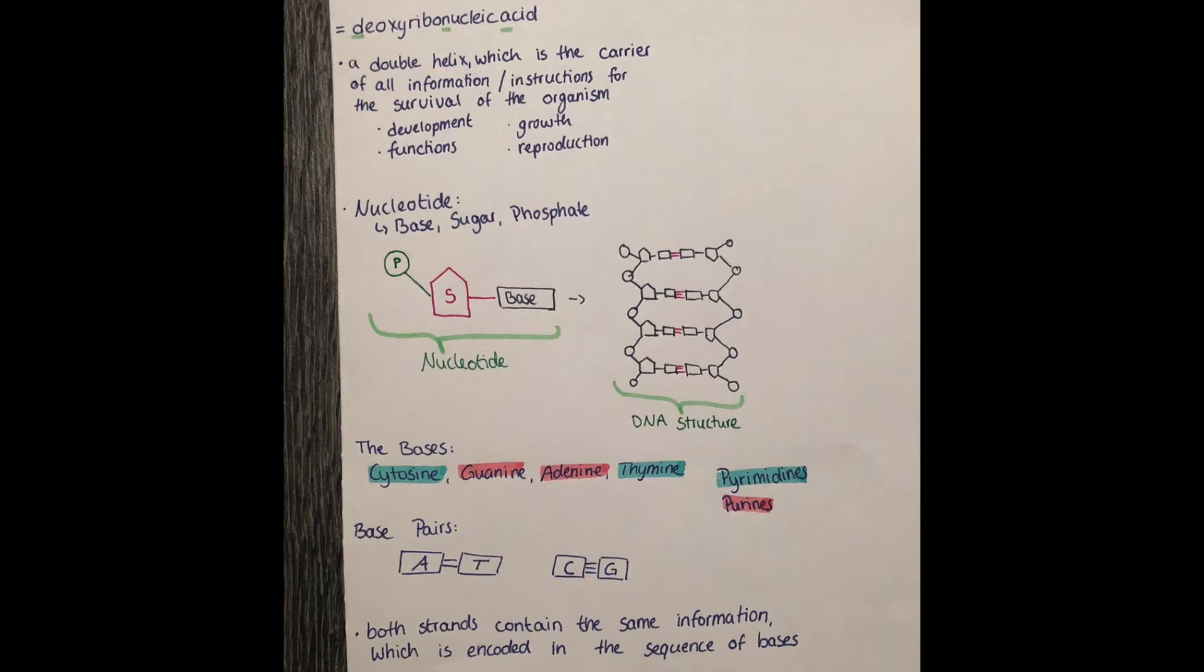Cytosine and thymine are pyrimidines, and guanine and adenine are purines. That doesn't have to say much more than it's just a classification.